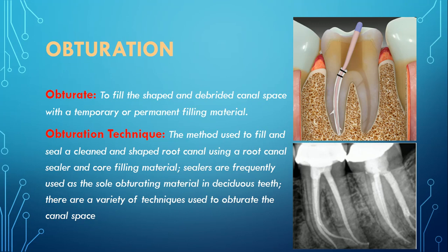What is obturation? Obturation means to fill the shaped and cleaned canal space with a temporary or permanent filling material. Obturation technique is the method used to fill and seal a cleaned and shaped root canal using a root canal sealer and core filling material. Sealers are frequently used as the sole obturating material in deciduous teeth. There are a variety of techniques used to obturate the canal space, which will be discussed later on.